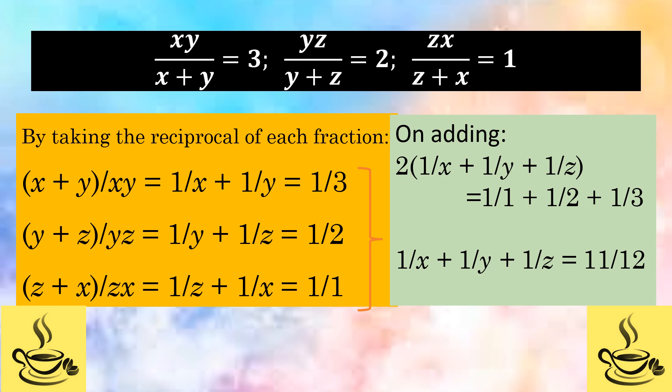The sum x plus y divided by product xy can be written as 1 by x plus 1 by y. Similarly, we get 1 by y plus 1 by z, and also 1 by z plus 1 by x.